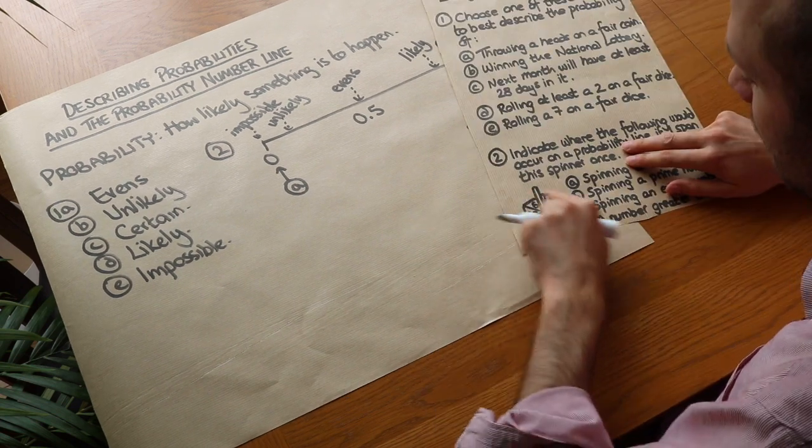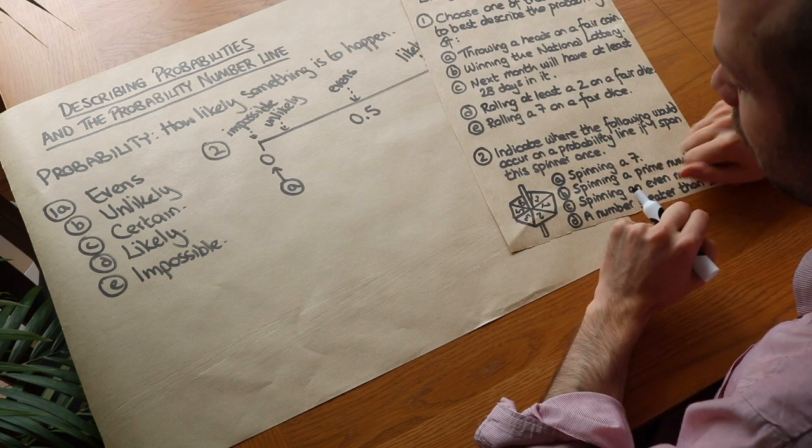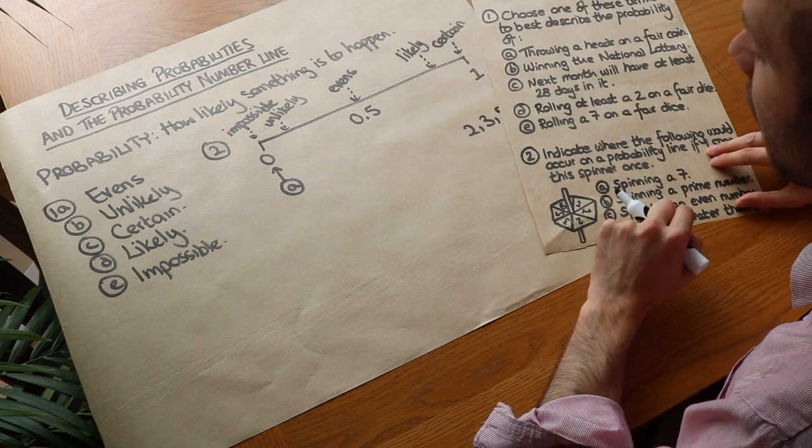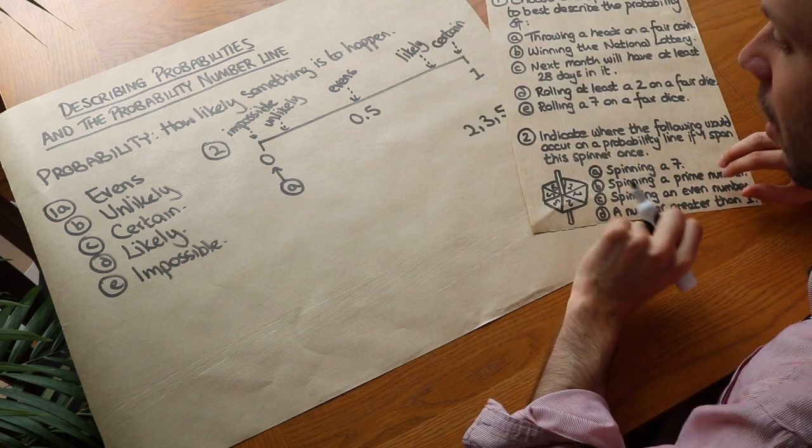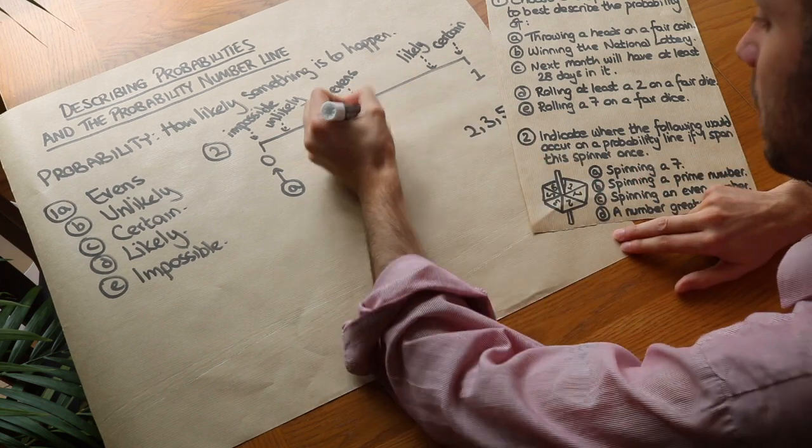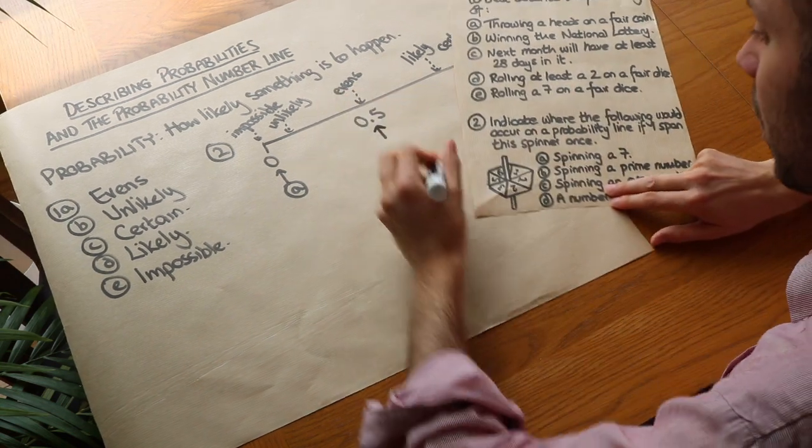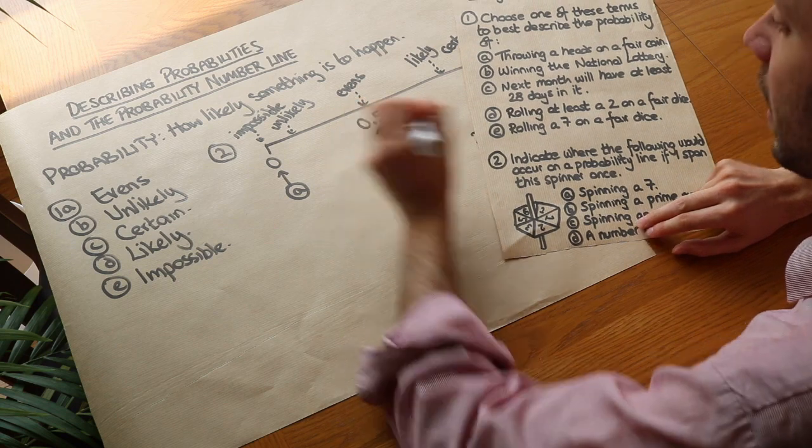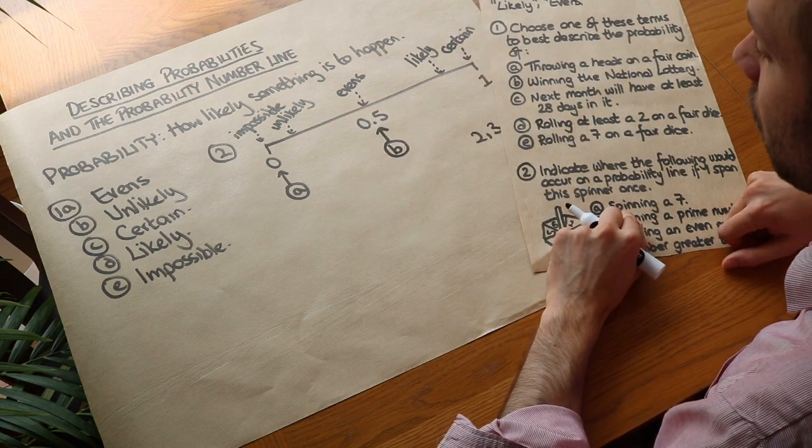And we've got 6 outcomes in total. Now in 3 of those 6 outcomes, we have a prime number. And that's half the time. So we say that would be evens. So spinning a prime number would be evens in the middle of our number line.